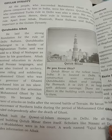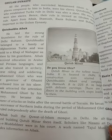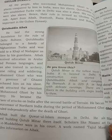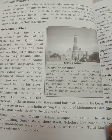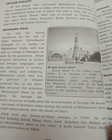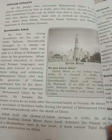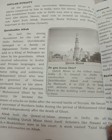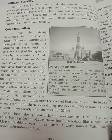Apart from Aibak, Altamash, Razia Sultana and Balban are important rulers in the Gulam Dynasty. The first one is Qutbuddin Aibak, the founder of the Slave Dynasty.